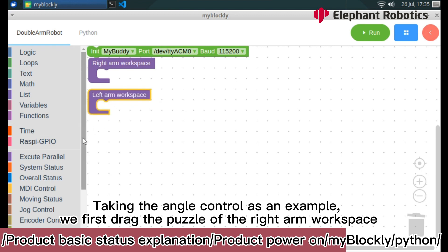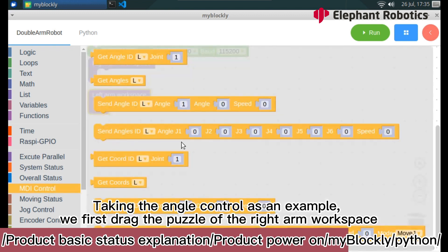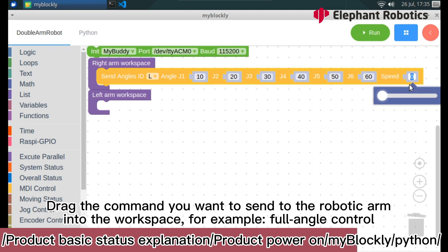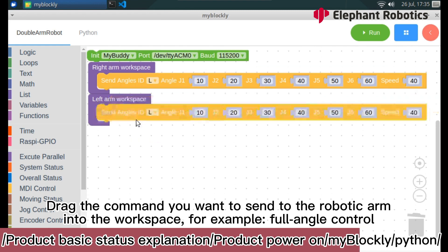Taking the angle control as an example, we first drag the puzzle of the right arm workspace. Let's drag the puzzle of the left arm workspace. Drag the command you want to send to the robotic arm into the workspace.